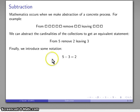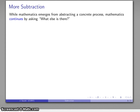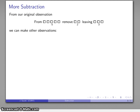Well, let's take a look at some other subtractions. Mathematics does emerge from abstracting a concrete process, and we actually continue by asking, well, what else is going on here? So let's take a look at our original observation again: from this thing which we associated with cardinality 5, remove this thing cardinality 2, leaving this thing cardinality 3. And there's two other important observations, and our ability to do subtraction is centered around these two observations.